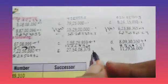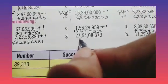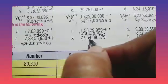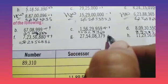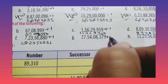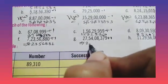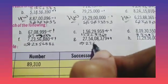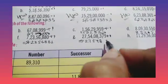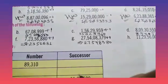So part G: we have 27 crore 54,8,379. If we add one number, then it becomes 27 crore 54,8,380.